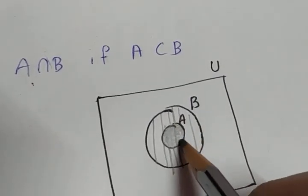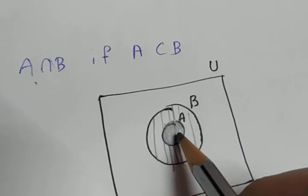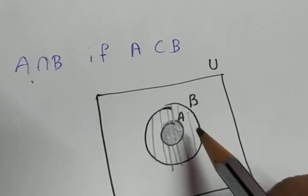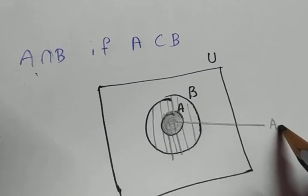This circle, the smaller circle, represents the region in which both the shadings are there. That means it is the same as A. So this is A intersection B.